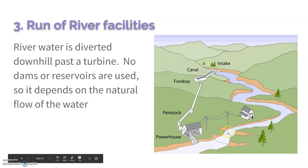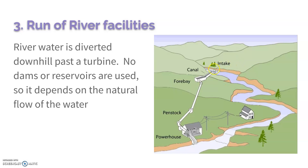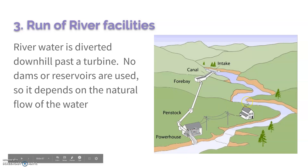There are also run of river facilities, where we don't completely block the river. This is beneficial in places where blocking the river has caused a lot of environmental damage and upset the ecosystem. It just diverts some of the water downhill past the turbine to create electricity. It does depend on the natural flow of water, so it's not ideal for really large power loads, but for smaller power loads it's okay.